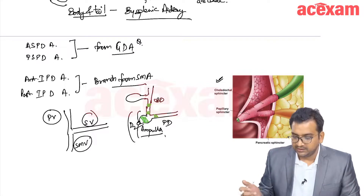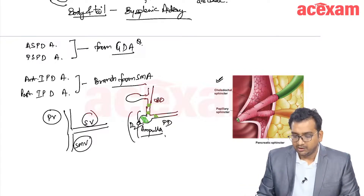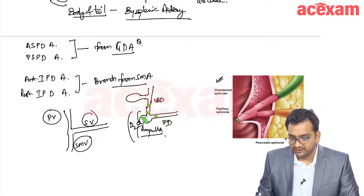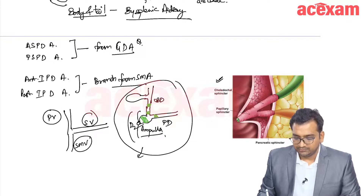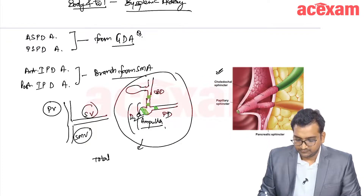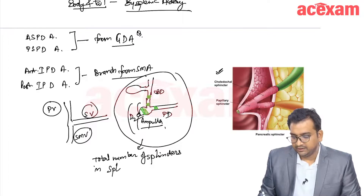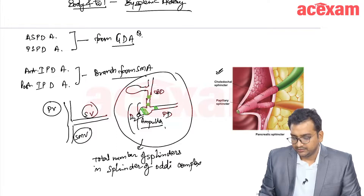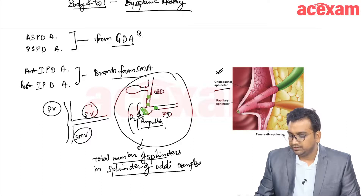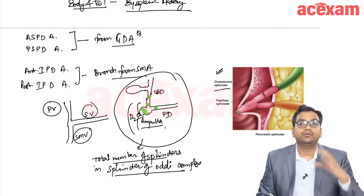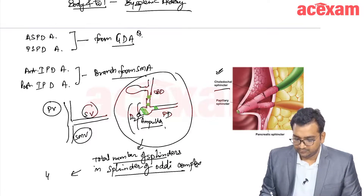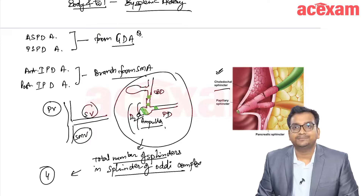A question was asked about how many sphincters are in the ampullary structure. The choledochal sphincter is actually two — superior and inferior — so the total number of sphincters in the sphincter of Oddi complex is four.